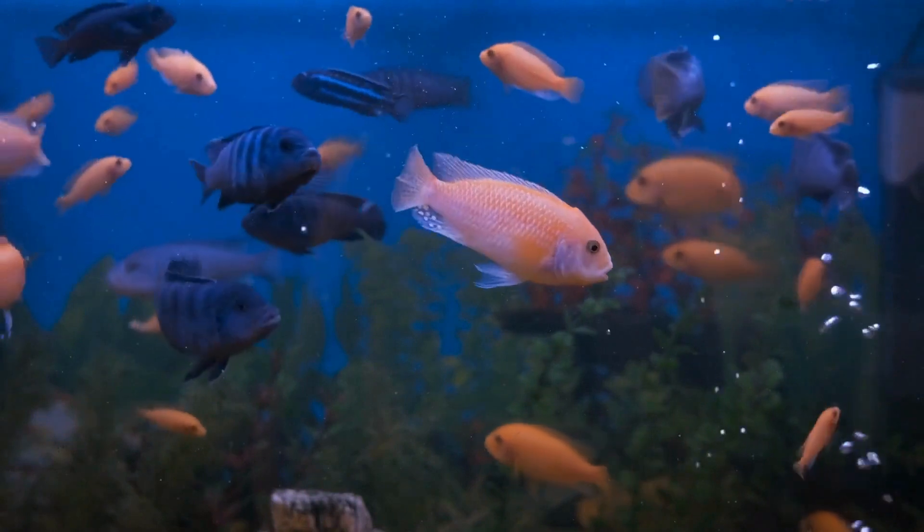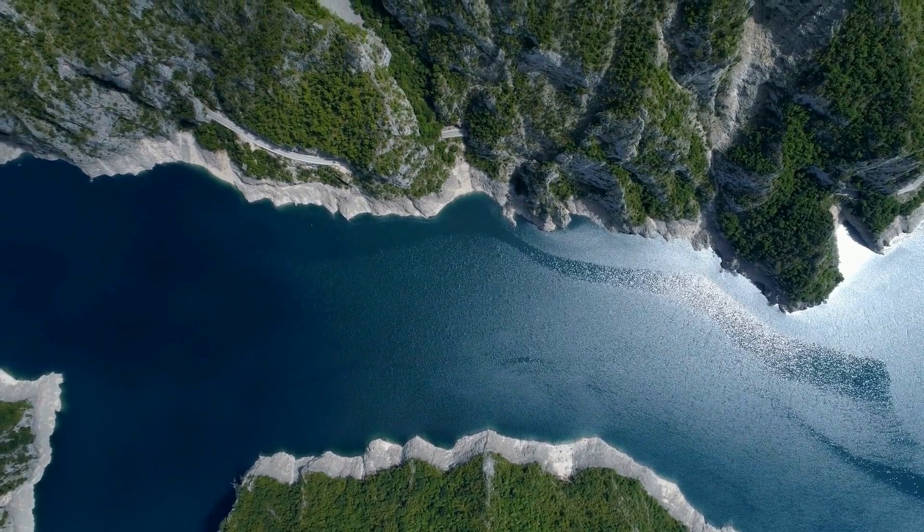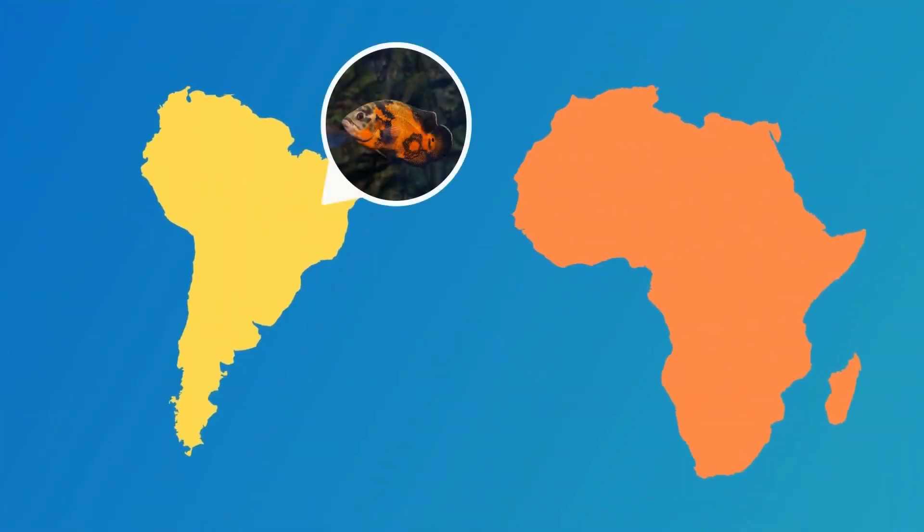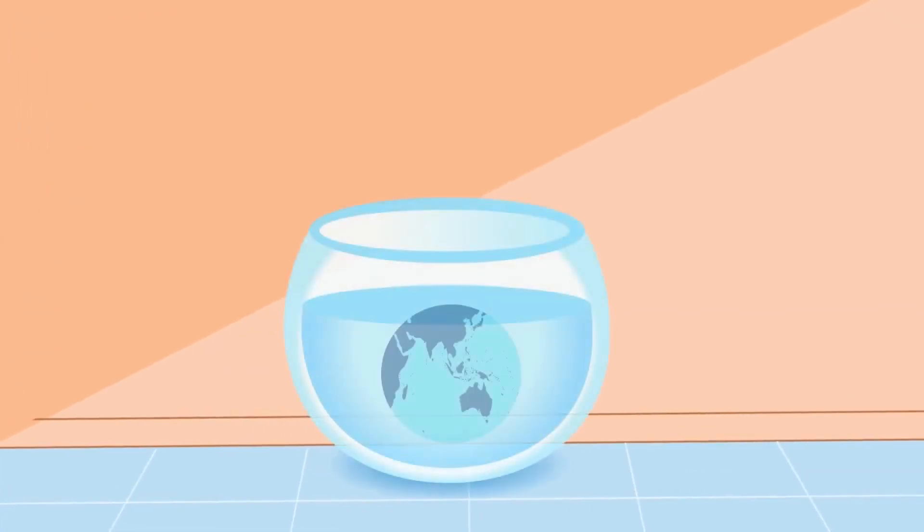The third factor is fish habitat. Generally, most of the cichlids come from Africa and South America. Now you have to imitate a similar environment inside your aquarium, which may not be suitable for other fish like goldfish or other smaller fish.